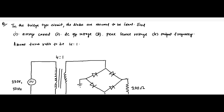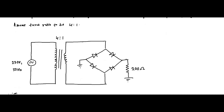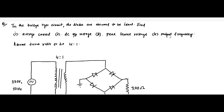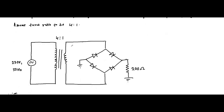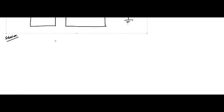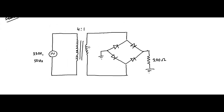Here is another question on a full wave rectifier. In the bridge type circuit, the diodes are assumed to be ideal — meaning no forward voltage, no forward resistance. We have to find the average current, the DC output voltage, the peak inverse voltage, and the output frequency. The turns ratio is given as 4:1. We will now solve it and copy the circuit diagram.